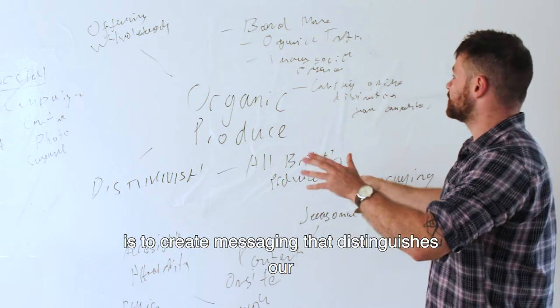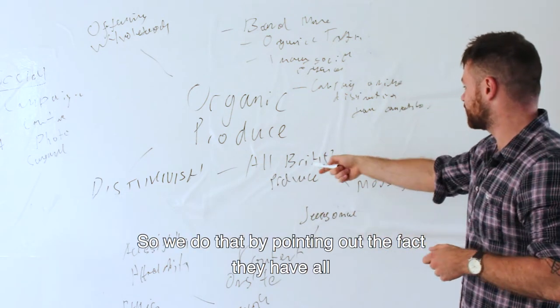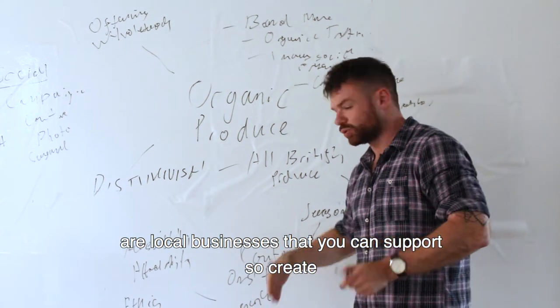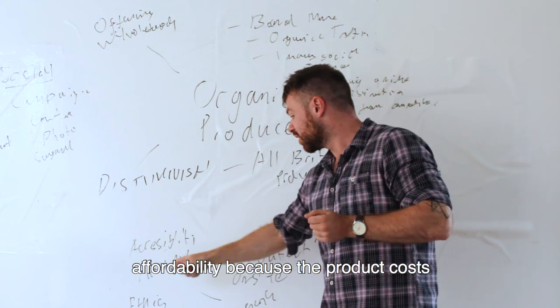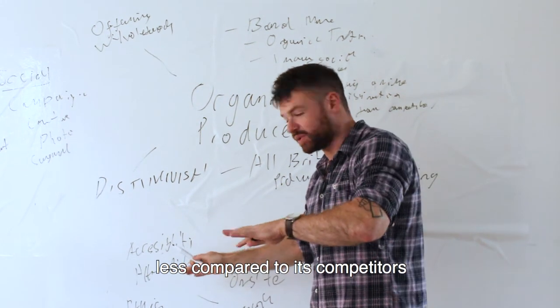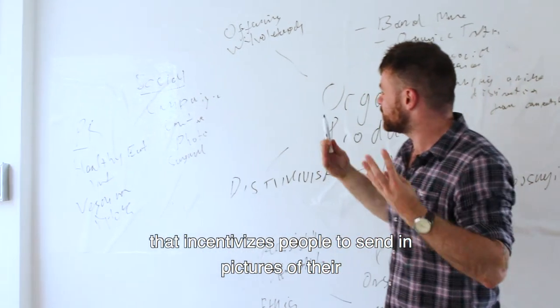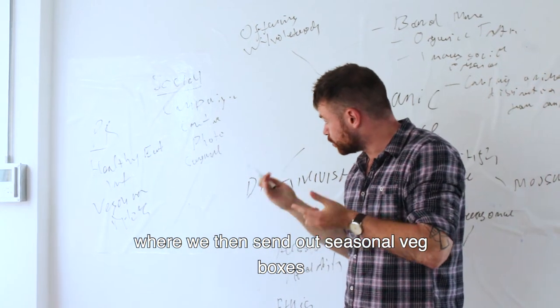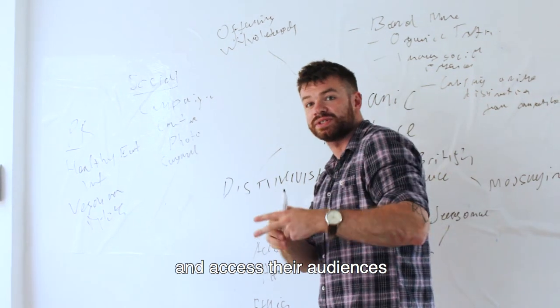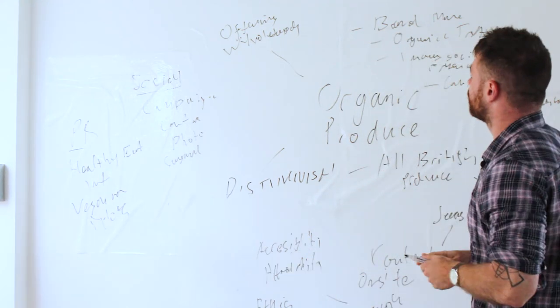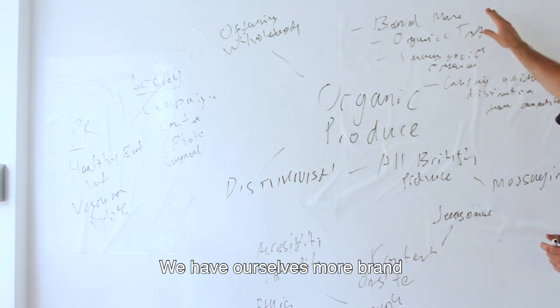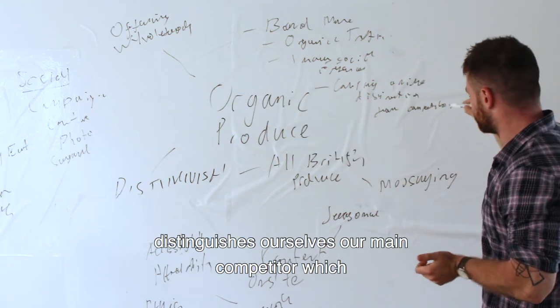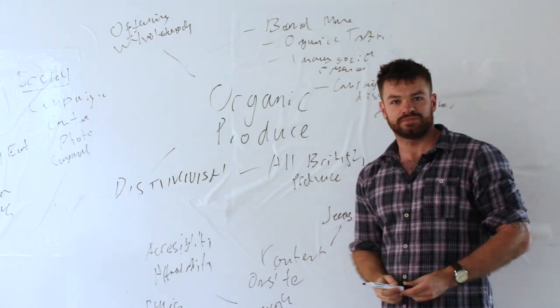The whole premise of this is to create messaging that distinguishes our client from Whole Foods. We do that by pointing out the fact that they have all British produce. That dictates our messaging. We then get on-site content to talk about the fact that all of these local farmers are some local businesses that you can support. So, create messaging that talks about accessibility, affordability, because the product costs less compared to its competitors, and ethics. We use a social campaign that incentivizes people to send in pictures of their recipes with all the seasonal produce. We have a PR campaign that uses influencers, where we then send out seasonal veg boxes to get them to talk about and access their audiences, and talk about some of these particular messaging hot points. We distinguish ourselves from Whole Foods we have ourselves. More brand awareness, an increase in organic traffic. We increase our social presence as a result of the social media campaign, and we carve out a niche that distinguishes ourselves from our main competitor, which in this instance is Whole Foods.